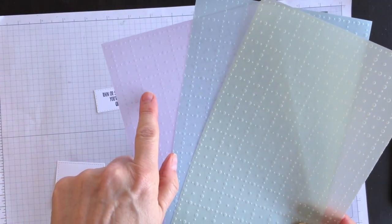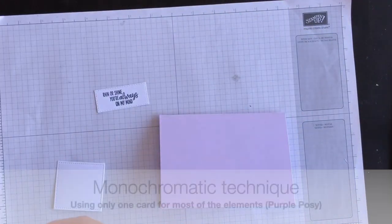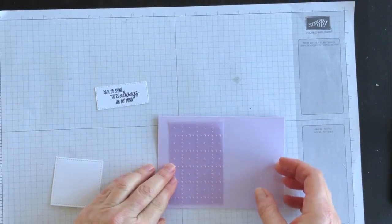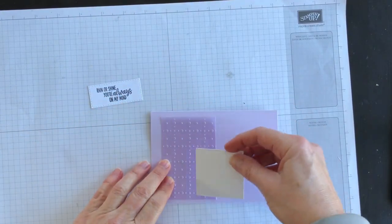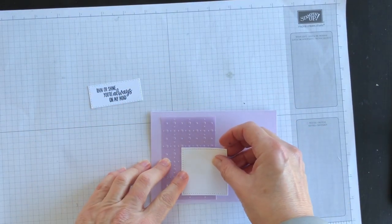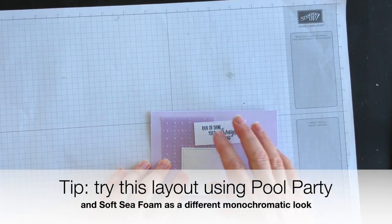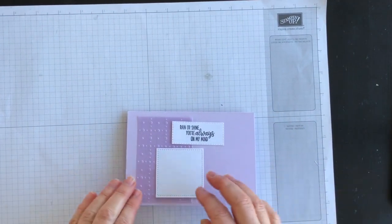And as I said, my card is going to be monochromatic with the Purple Posy. So I have a layer of the Purple Posy Vellum, and then I want to put on the whisper white, and then I want my frays at the top.